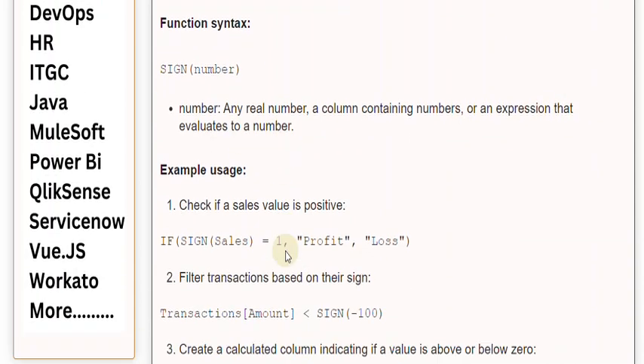Function syntax: SIGN(number). Number: any real number, a column containing numbers, or an expression that evaluates to a number. Example usage: